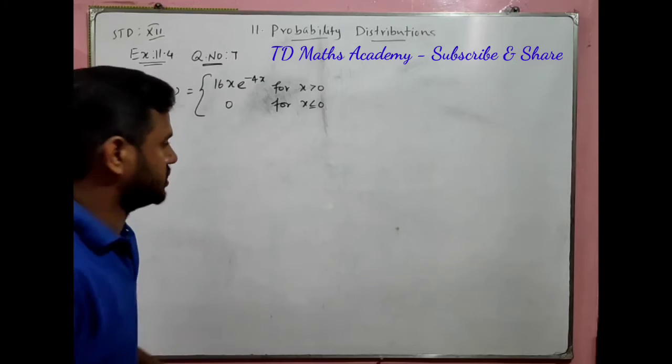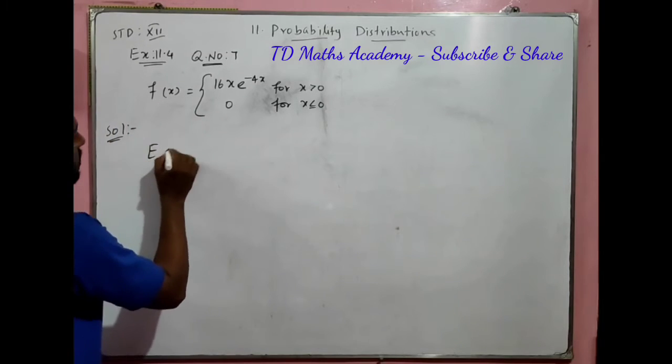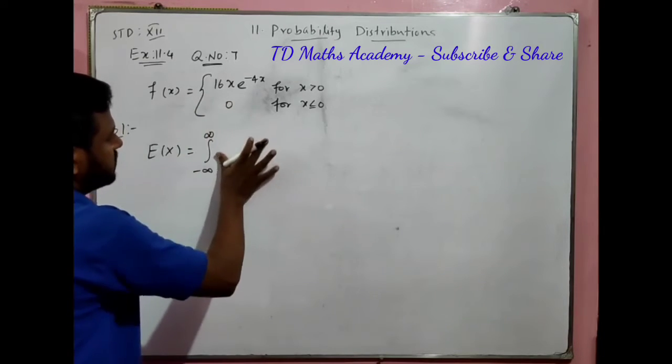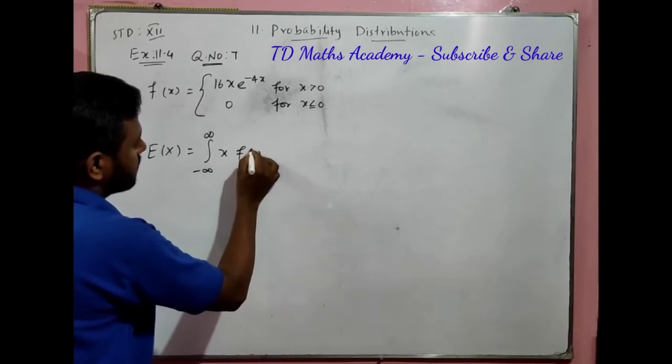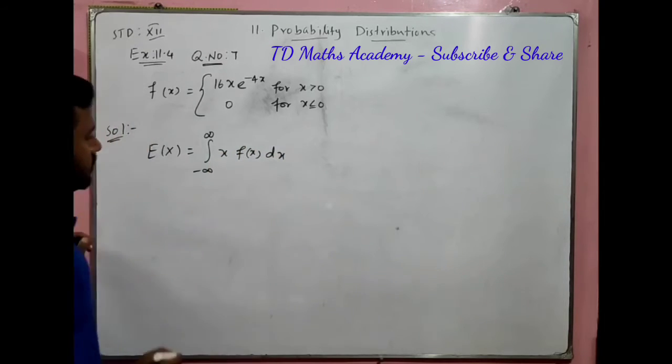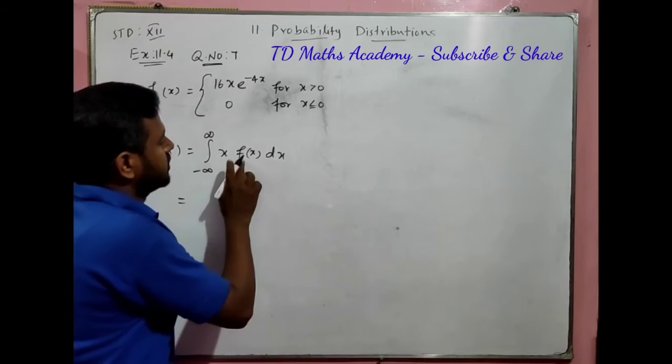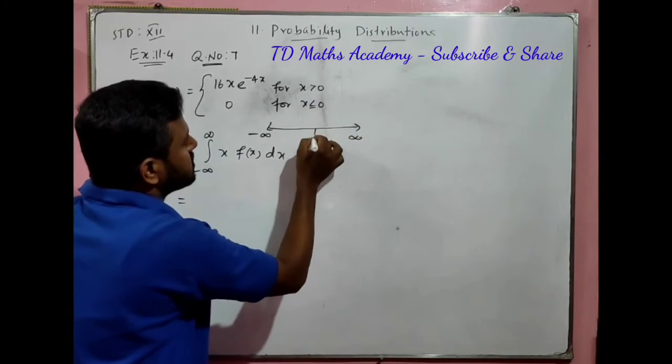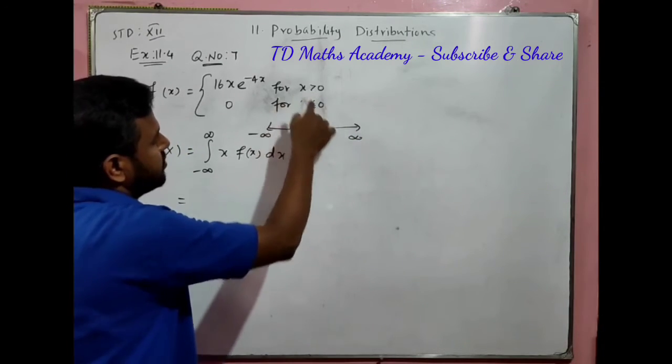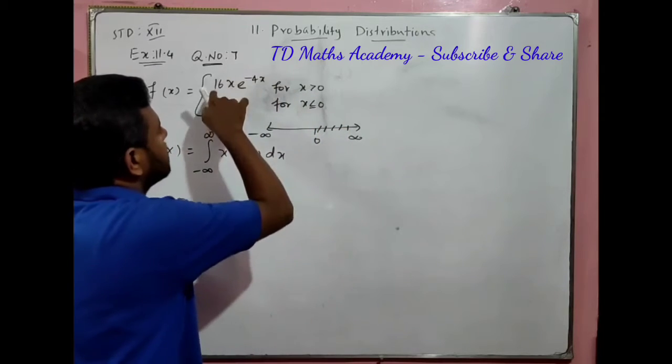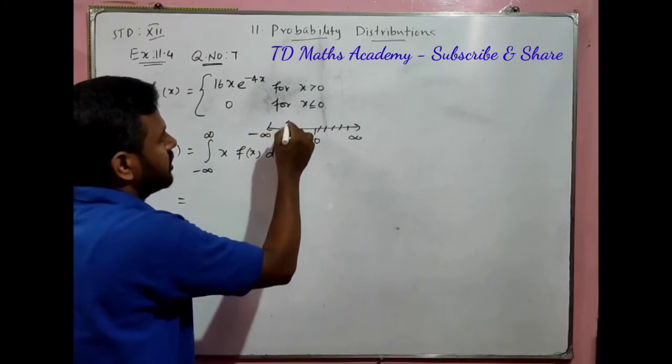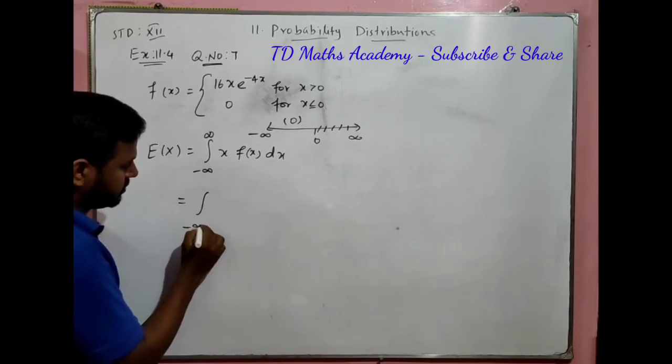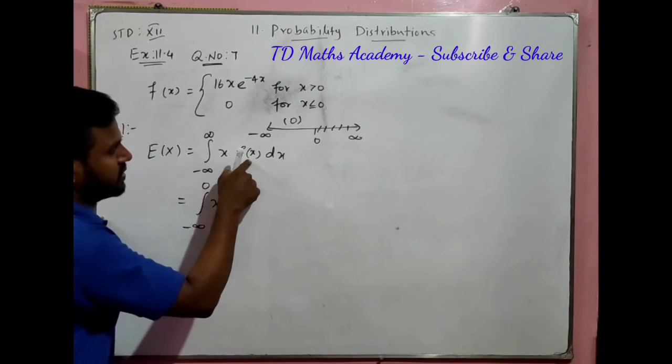What is the mean formula? E(x) equals integration from minus infinity to plus infinity of x times f(x) dx. We will split the function at 0. For x less than 0, f(x) equals 0.